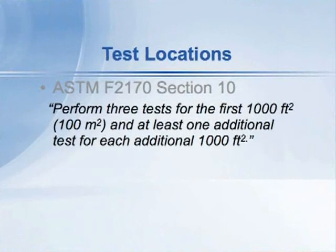We often get asked the question: how many tests are necessary and where should the test be placed within a building? The ASTM F2170 standard for relative humidity probes in concrete gives direction in section 10. It says perform three tests for the first 1,000 square feet of floor area and one test for each additional 1,000 square feet.